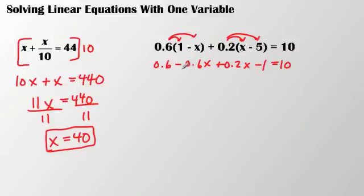I'm going to combine my like terms. I have negative 0.6x and a positive 0.2x. That's going to get me a negative 0.4x. Then I'm going to combine 0.6 and negative 1, and that's going to leave me with negative 0.4, and that's going to equal 10.